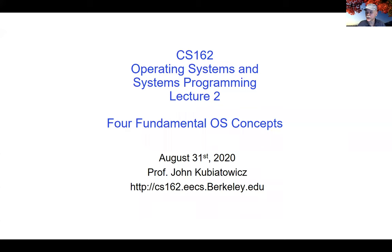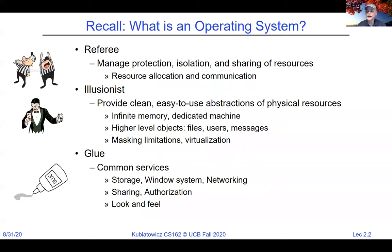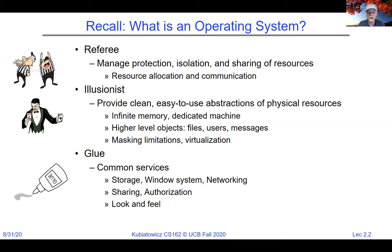As you remember from last time, we were talking about what an operating system is. It's really hard to say exactly what it is because not everybody agrees, so we asked what it does. We talked about how an operating system acts as a referee, illusionist, and glue — where the referee manages protections on resources, the illusionist makes it look like we have a cleaner set of resources than the actual ones, and the glue is a set of common services like windowing systems and file systems.